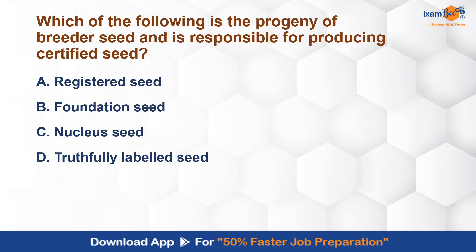Moving to the next question, which is very important: Which of the following is the progeny of breeder seed and is responsible for producing the certified seed? This is a very basic question, but many students get confused because they study it in the wrong way. There are not three types of seed — this is the generation of seed.